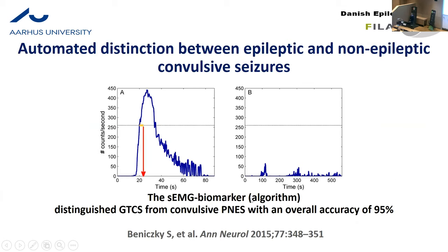We can also use this gadget to distinguish between convulsive epileptic seizures and distractors like psychogenic non-epileptic seizures. Using this algorithm, we can distinguish between the two entities with an accuracy of 95%. This is important because roughly 10% of patients treated for convulsive status epilepticus in the emergency room actually do not have seizures — so it's very important to provide this expertise also during the night when inexperienced young residents decide about treatment.